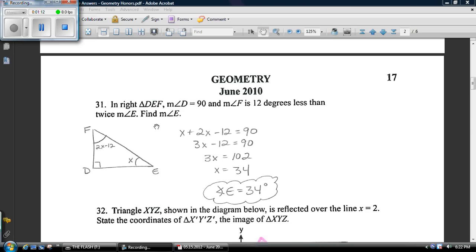Here's just a basic word problem. The right triangle, D is 90 and F is 12 less than twice E. So it's 12 less than twice E and I said E was X. If this is 90, that means these two have got to add up to be 90. Just solve it out and then E is 34.